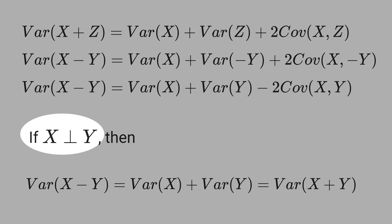Now, let's make the assumption that x and y are independent. In this case, the covariance between x and y vanishes. And then, we can write variance of x minus y equals variance of x plus variance of y. And this equals variance of x plus y.